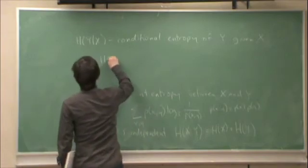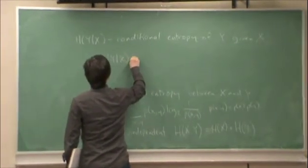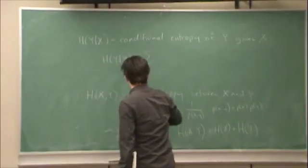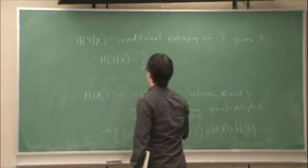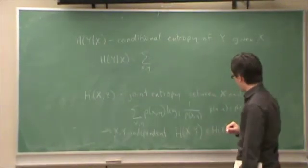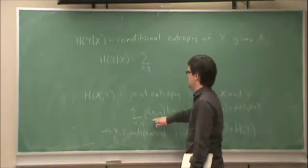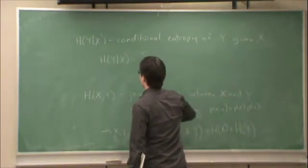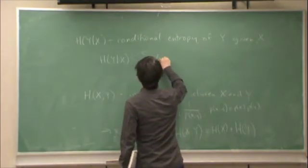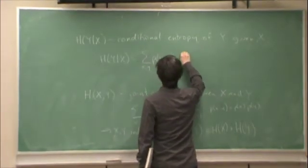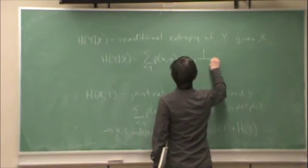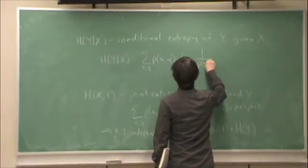H of Y given X is equal to the sum over x and y. So this is now sort of deviates from the pattern here. We don't substitute in p of y given x. We substitute in p of x and y, the joint probability, times log 2, 1 over p of y given x.